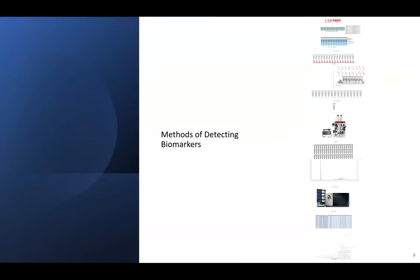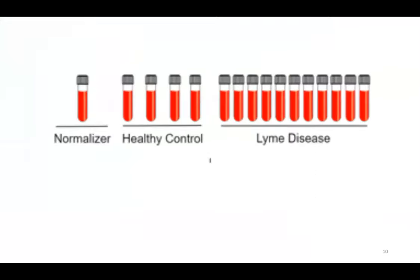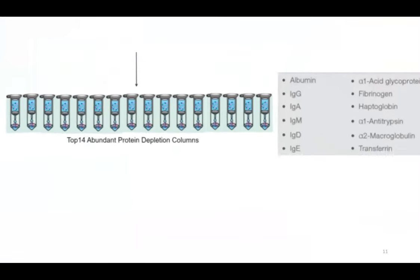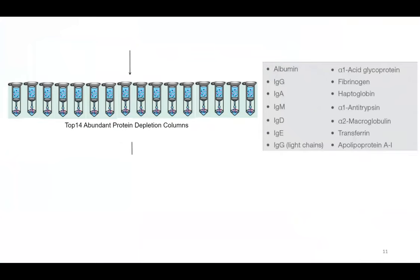In order to discover early Lyme disease biomarkers, it is necessary to figure out which biomarkers are up- and downregulated using proteomics. The protocol starts with 16 serum samples: 11 from Lyme disease patients, four are healthy controls, and one is also a healthy control used as a normalizer to compare results between different data sets. The serum samples are passed through top-14 abundant protein depletion columns to remove highly abundant proteins and reduce background noise.